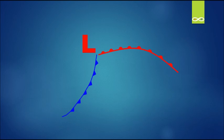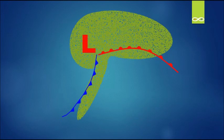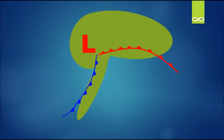Now we're going to see how the areas of precipitation tie into the different flows of air. Notice how the precipitation area looks like a comma head — you'll see that reference made a lot in relation to mid-latitude cyclones in news and other media outlets.